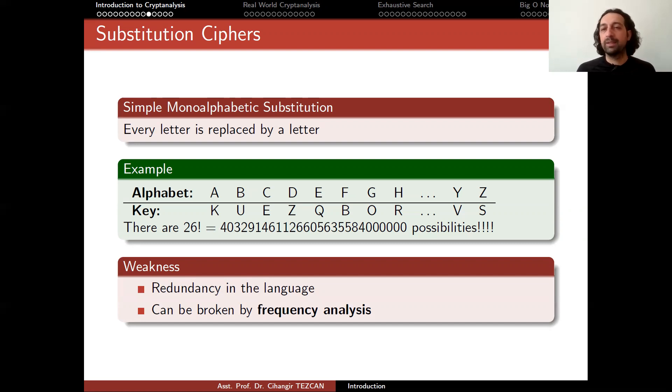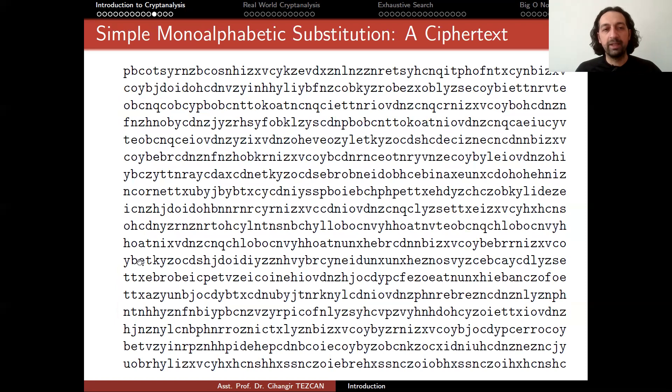So here the weakness is the redundancy in the language. So by using this redundancy in the language, the cipher can be broken. And this technique is called frequency analysis. So let's talk about this and how it is done. And as an example, I encrypted plaintext by using this simple monoalphabetic substitution. So I removed the punctuation marks and the empty spaces. So the ciphertext you will capture will look something like this. So as you can guess just by looking at it, there's not much you can do.